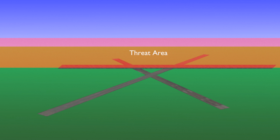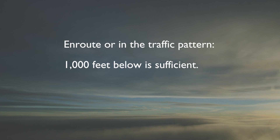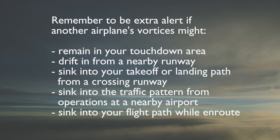Visualize where the wake turbulence is, stay above it, avoid it laterally, or wait a few minutes until it dissipates. Wake turbulence can also be encountered en route or in the traffic pattern. Usually a thousand feet below the other airplane is sufficient to avoid wake turbulence. Remember to be extra alert if the other airplane's vortices might remain in your touchdown area, drift in from a nearby runway, sink into your takeoff or landing path from a crossing runway, sink into the traffic pattern from operations at a nearby airport, or sink into your flight path while en route.